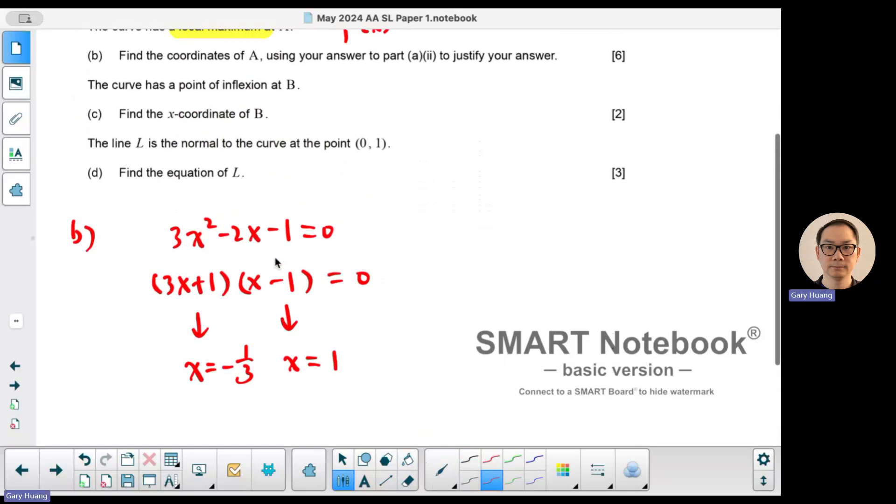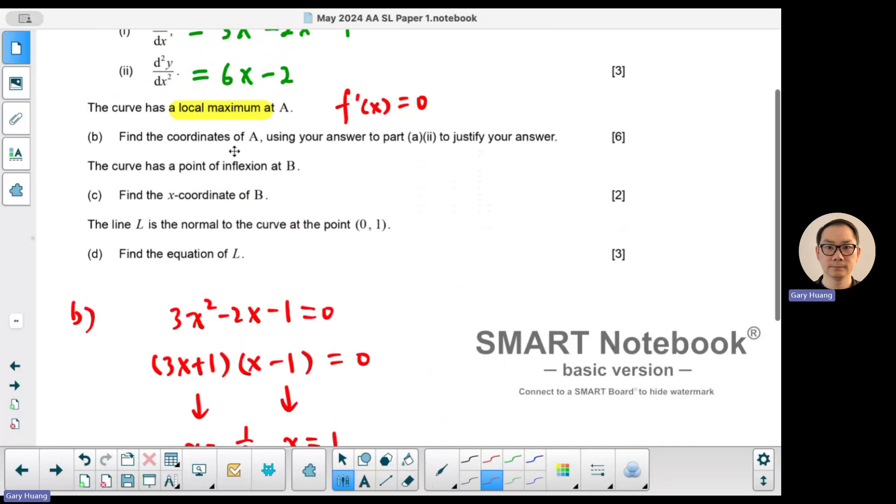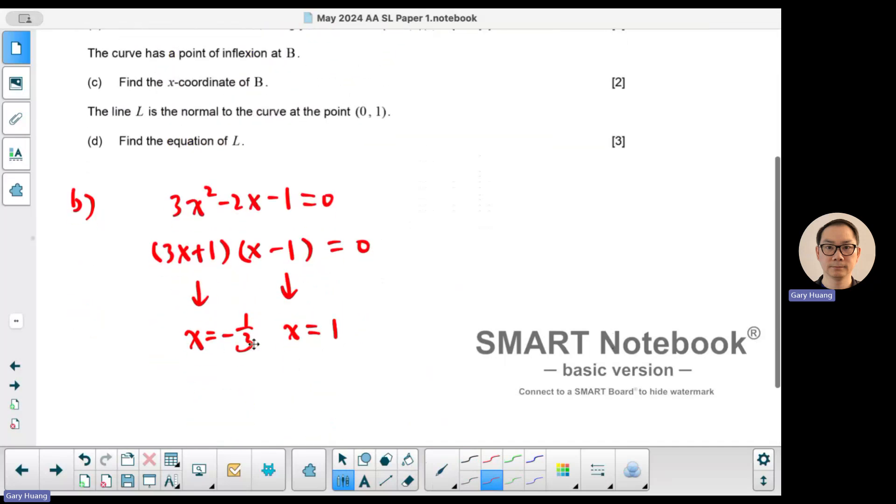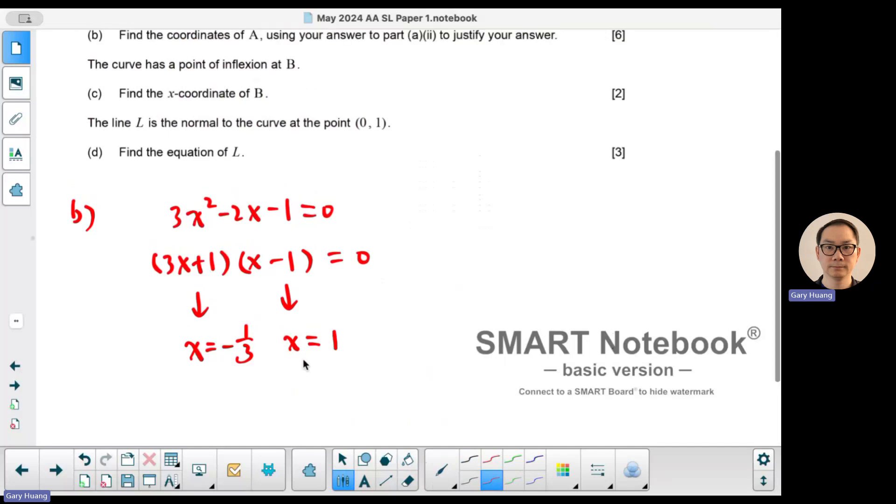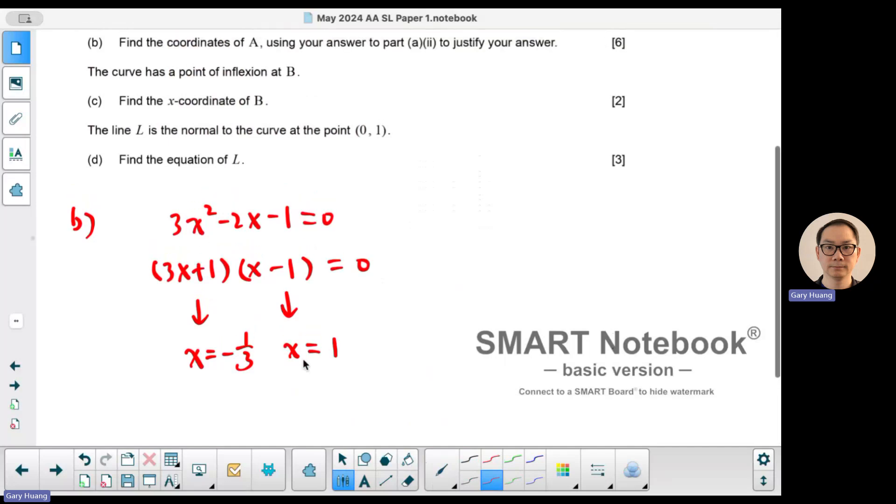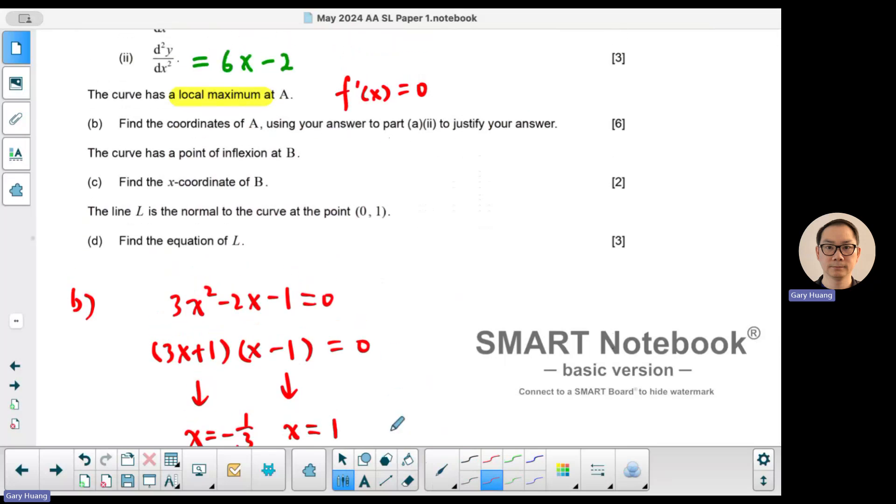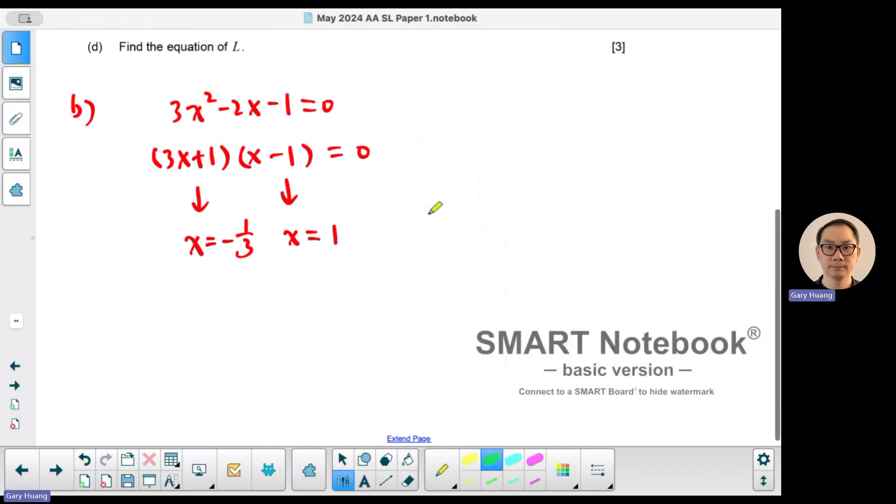Now we have two points here. They say find a coordinate of A being the local maximum. So one of them is a maximum and the other is probably going to be a minimum. How do we know? Part B says use your answer in part A2 to justify your answer. Part A2 is the second derivative. So that means they want you to use the second derivative test.